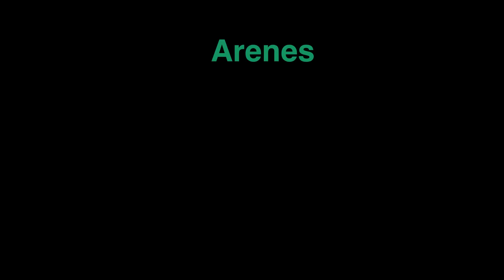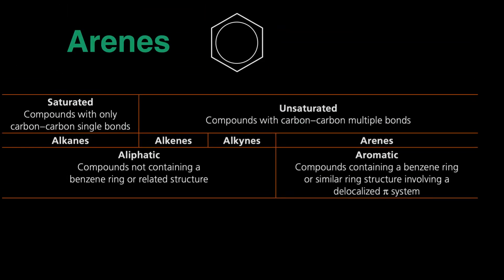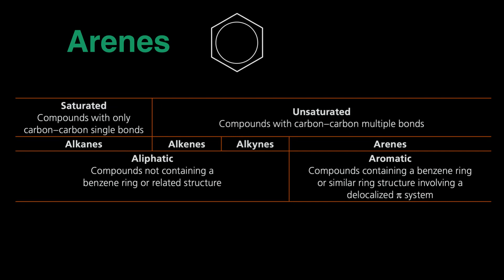This video is on arenes. Arenes are organic compounds that have an aromatic ring. The most basic one is called benzene, which you've probably seen in A-level questions. Hydrocarbons can be divided into saturated and unsaturated. The saturated ones we saw in AS level were alkanes, and we also know alkenes and alkynes exist. There's another form of unsaturated compounds called arenes.